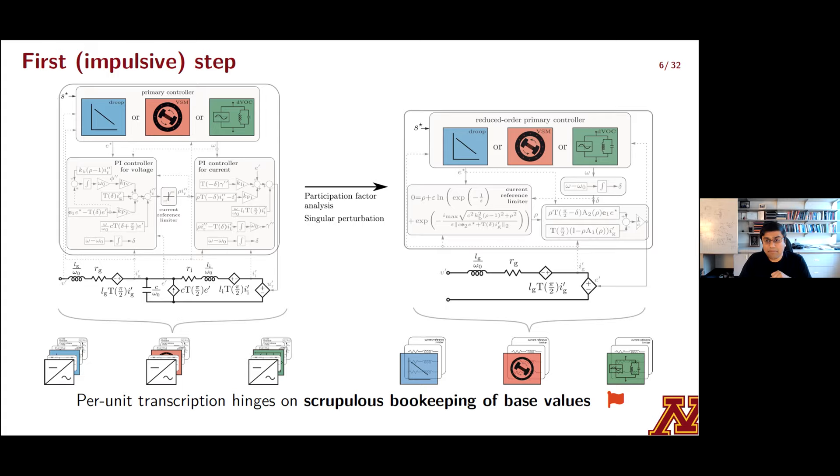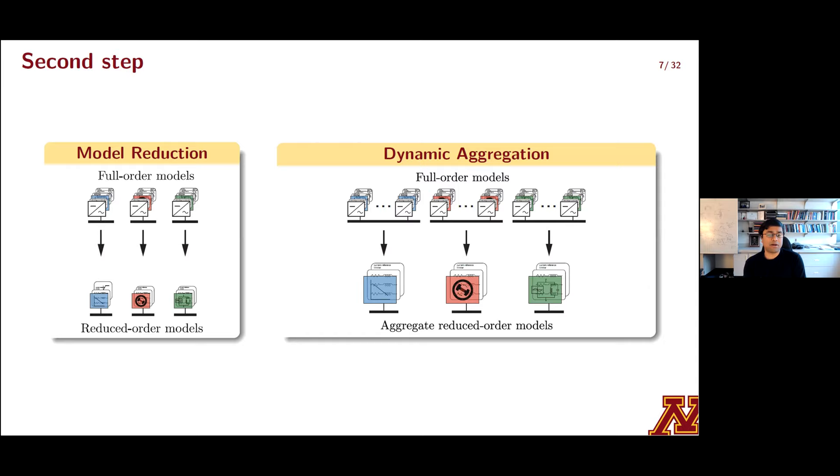So getting back to model reduction, here's another neat result that we stumbled along the way. We know how to get reduced order models for individual grid forming inverters, but what if you had multiple grid forming inverters connected in parallel at a single bus? So it turns out that with appropriate parametrization, you can still get a reduced order, structure preserving dynamic aggregate in such settings under some basic homogeneity assumptions with regard to parameters.